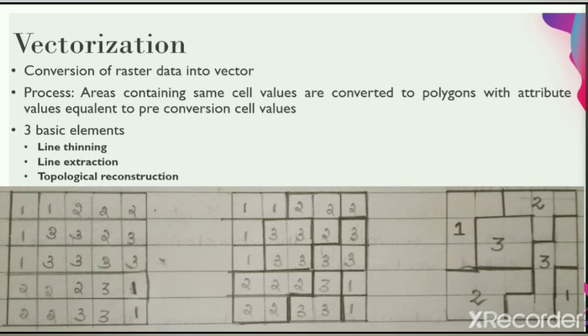The line thinning will be followed by line extraction. Line extraction is the process of determining where the individual line will begin and end. Topological reconstruction follows the line extraction technique. It will try to connect the extracted lines as well as show where digitizing errors exist.